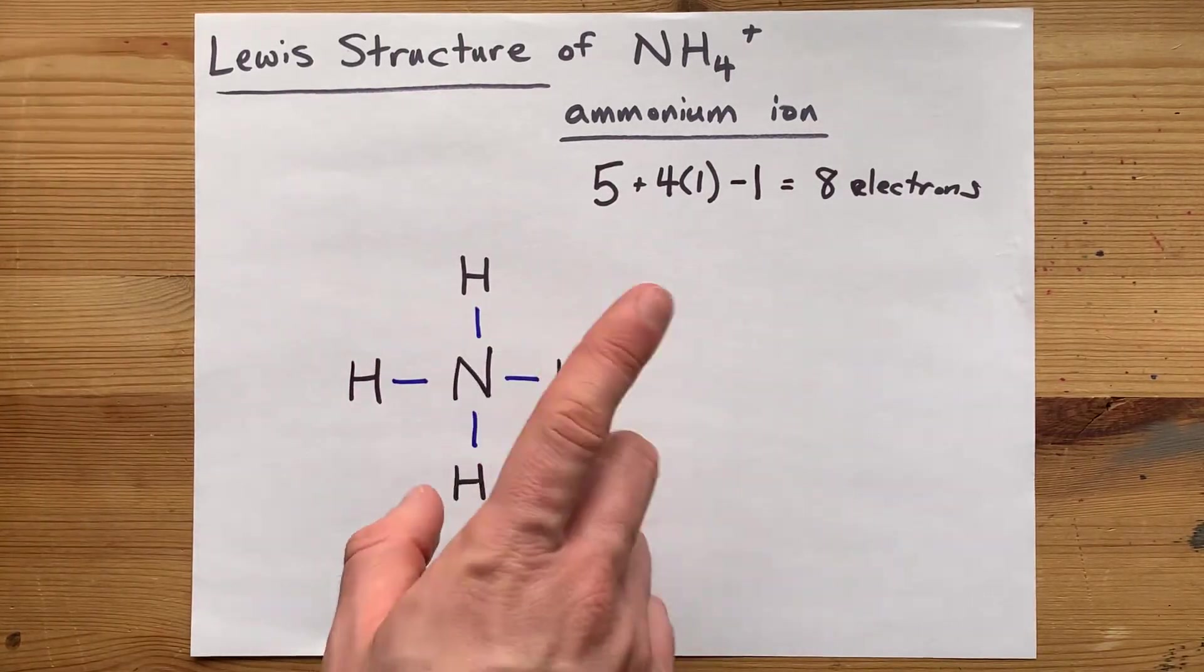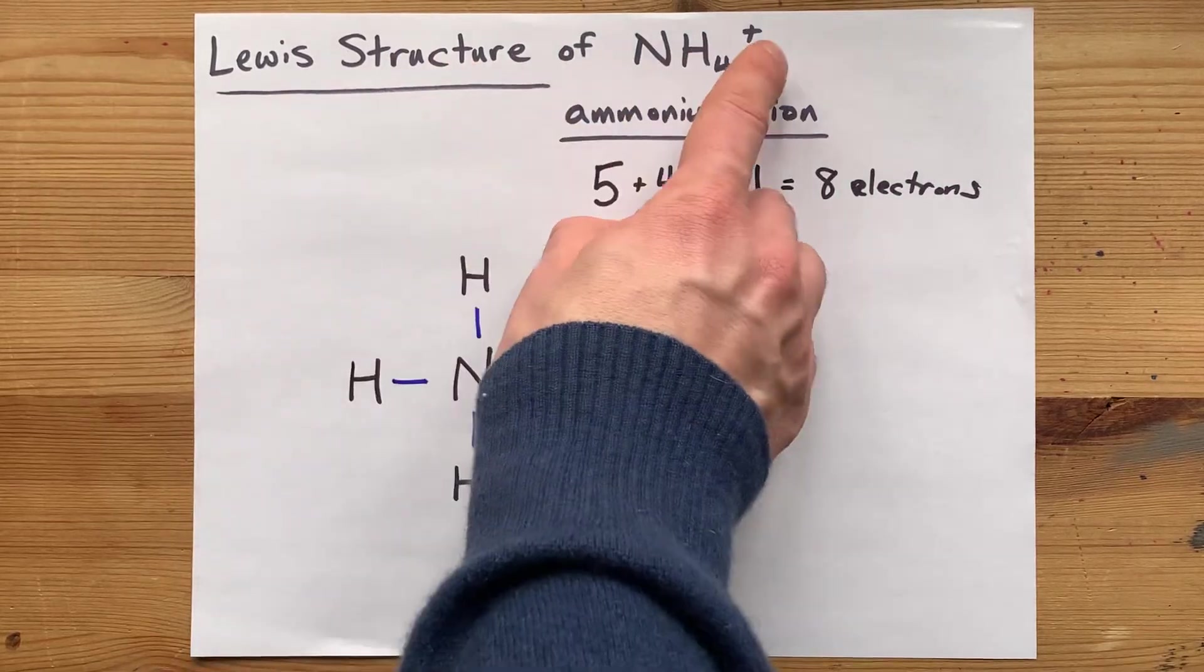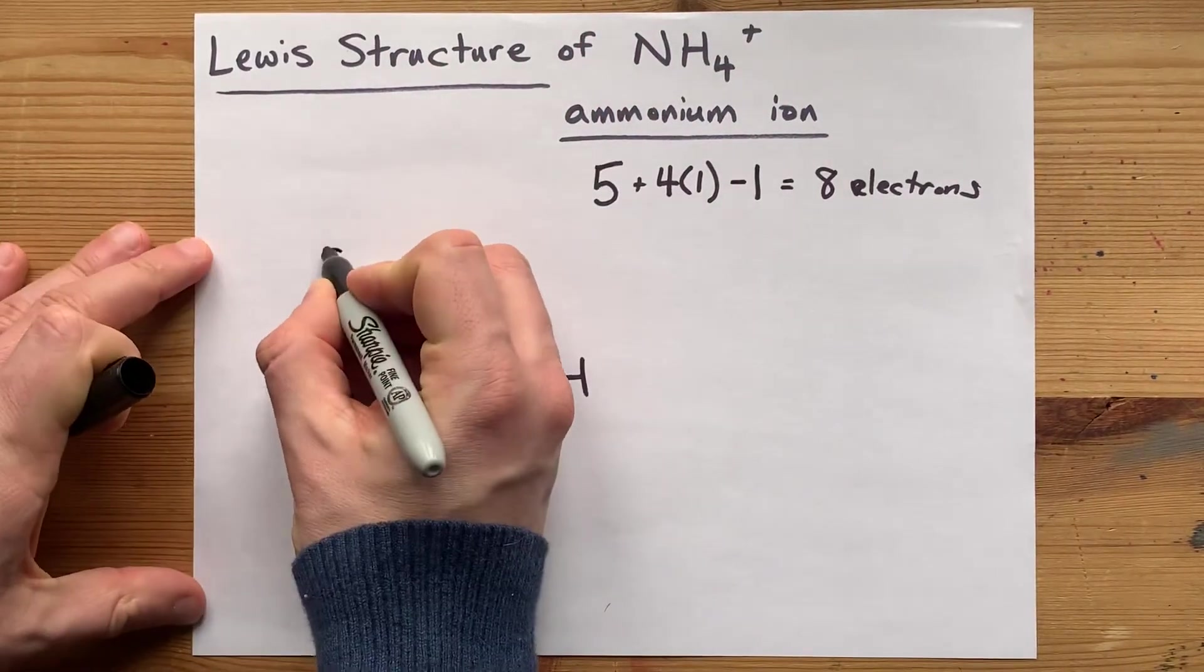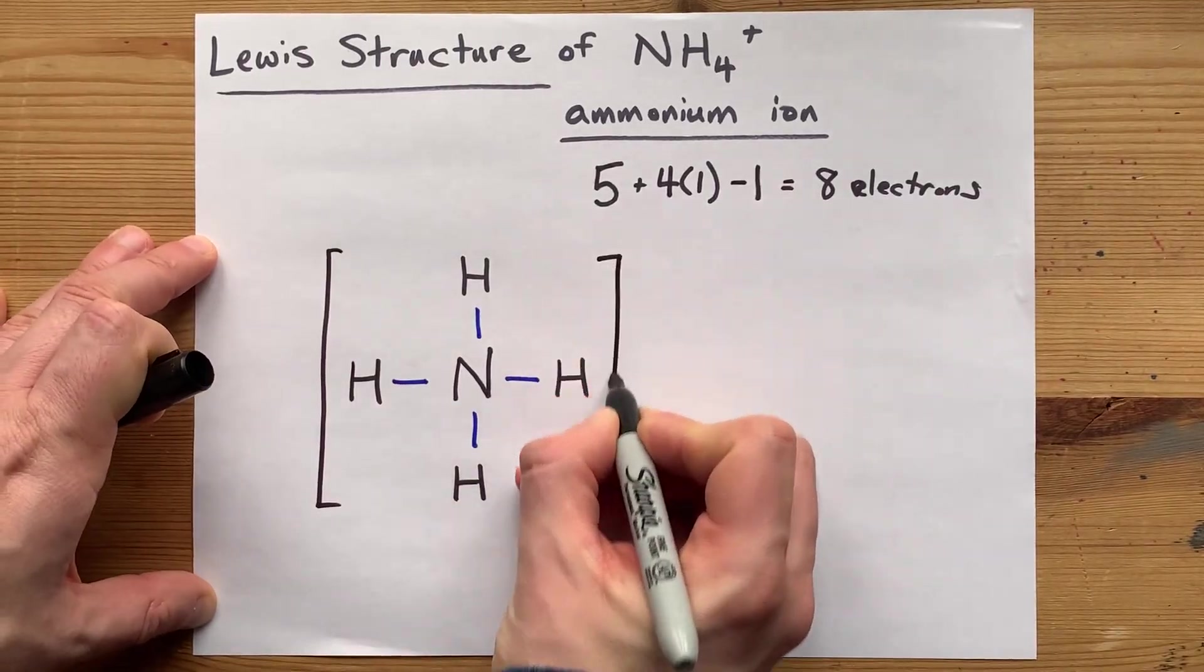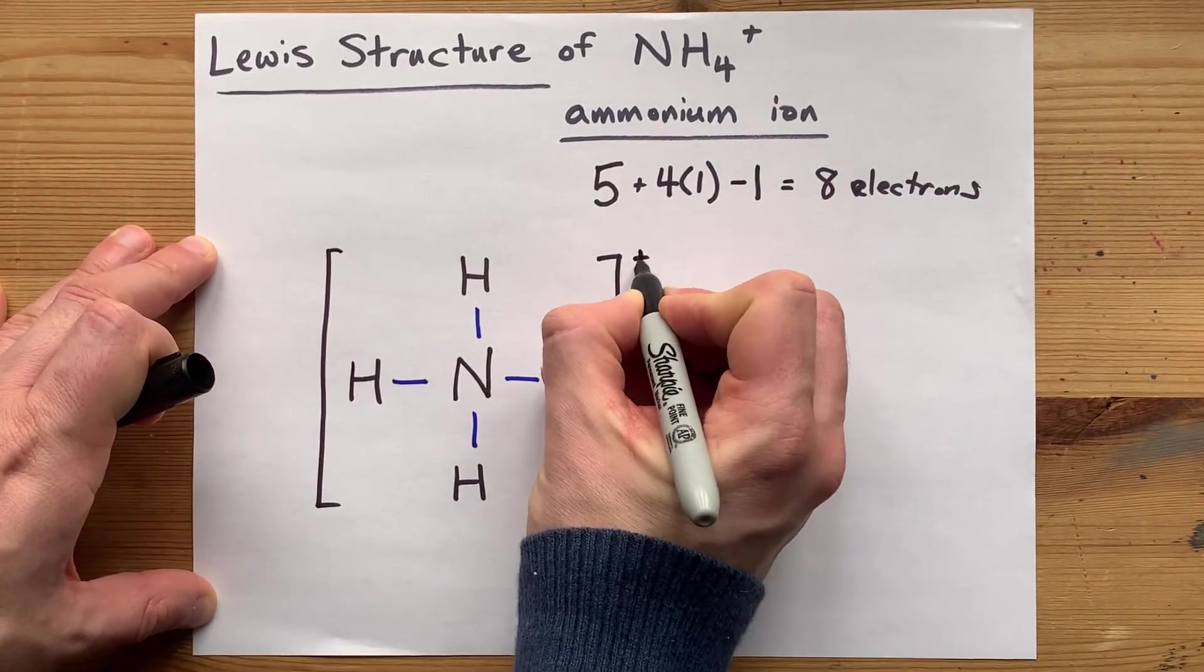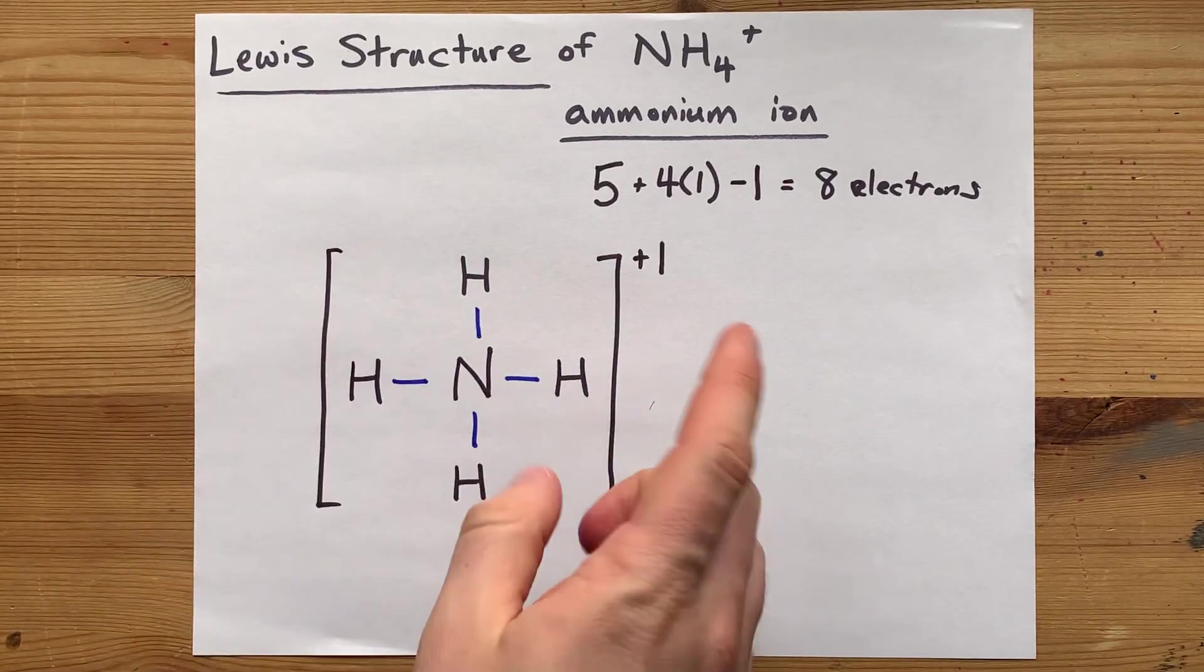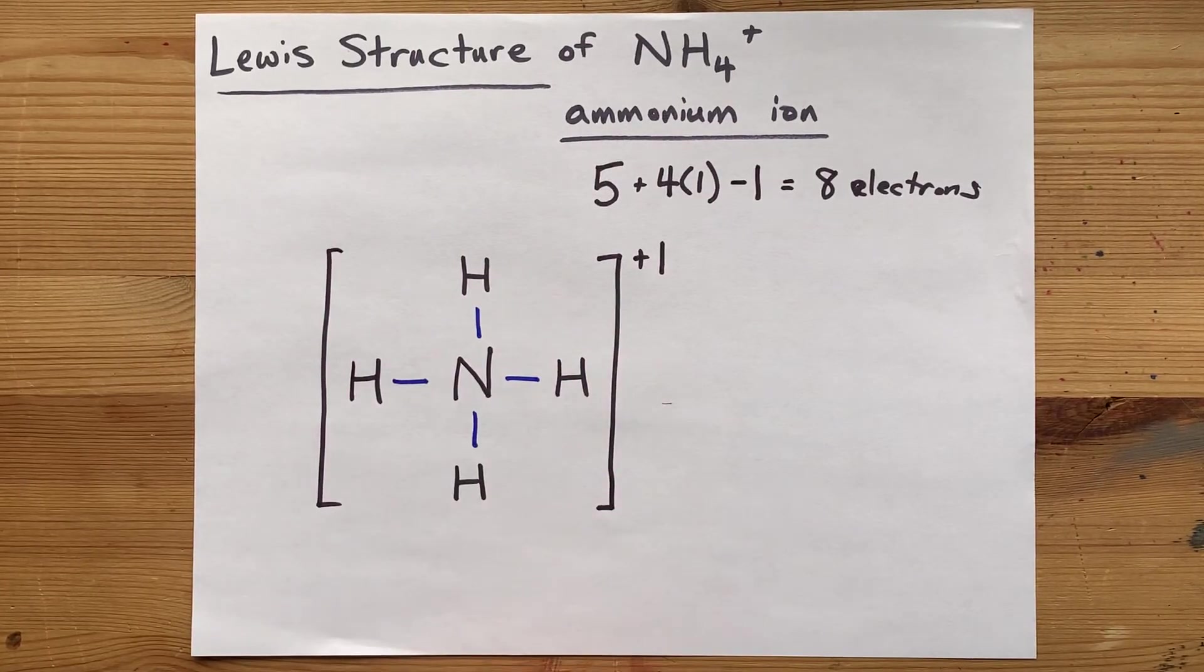We're almost done. The only other thing is the Lewis structure of an ion, a charged particle, needs square brackets around itself, and then a charge written in the top right-hand corner. Now there's your completed Lewis structure.